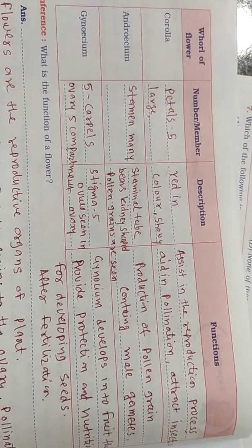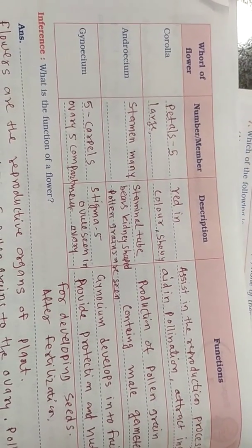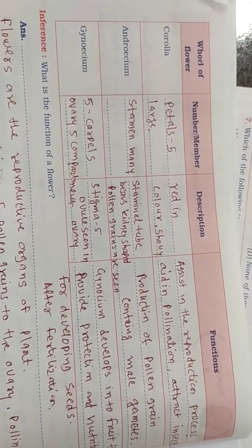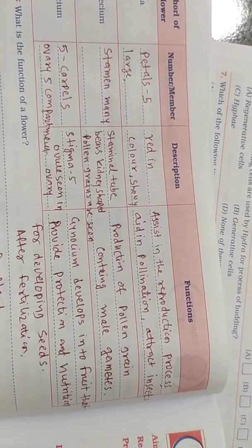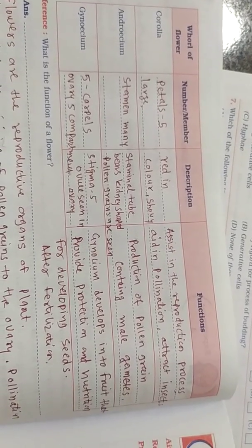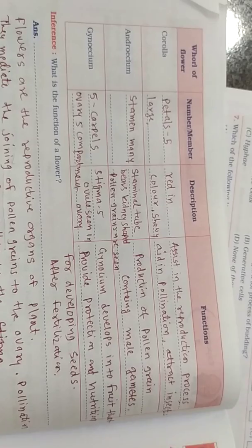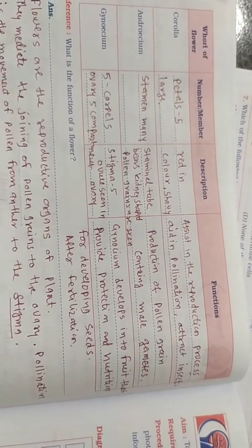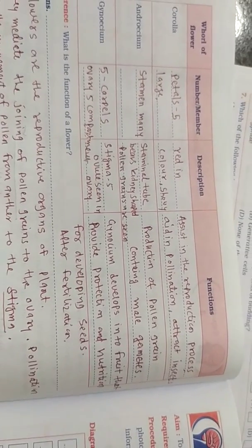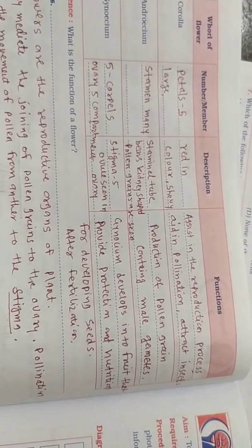The corolla consists of petals, which are larger in size. The petals are red in color. The function of the corolla is to assist in the reproduction process, aid in pollination, and attract insects. This is known as insect pollination. The brightly colored flowers attract insects for pollination.